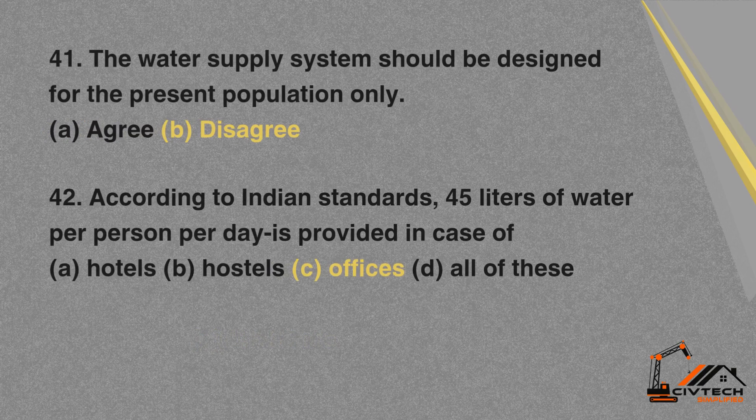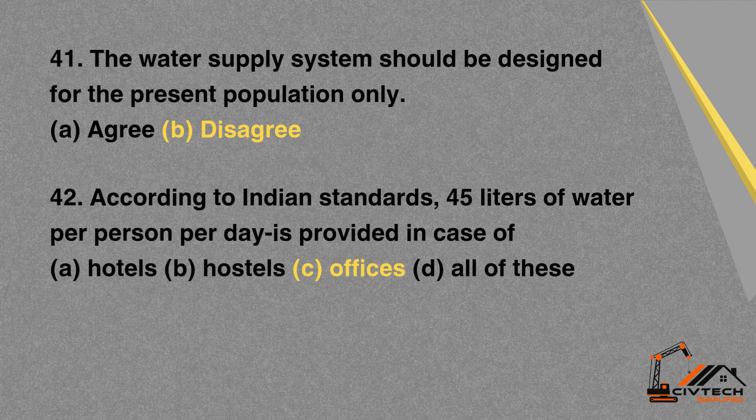MCQ 41: The water supply system should be designed for the present population only. A. Agree. B. Disagree. Correct option: B. Disagree.